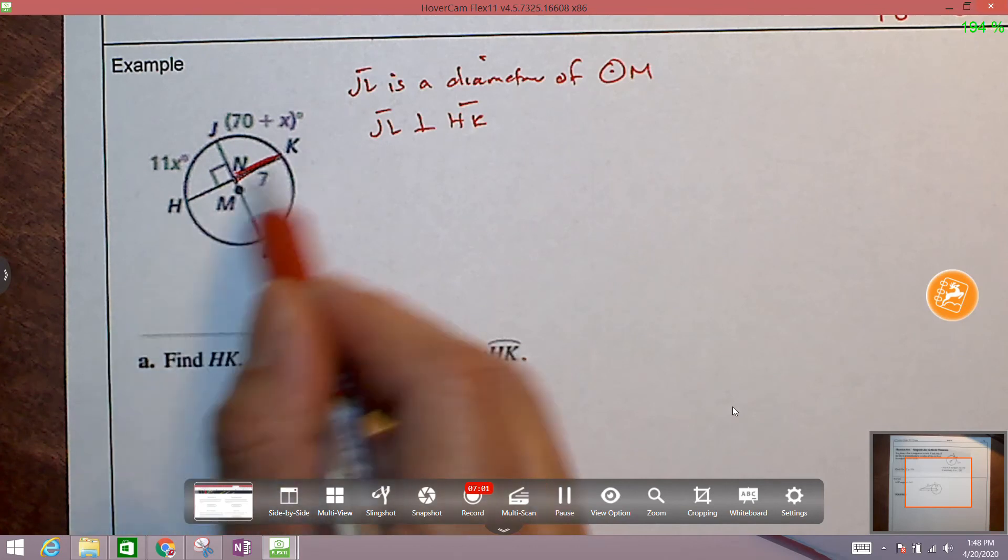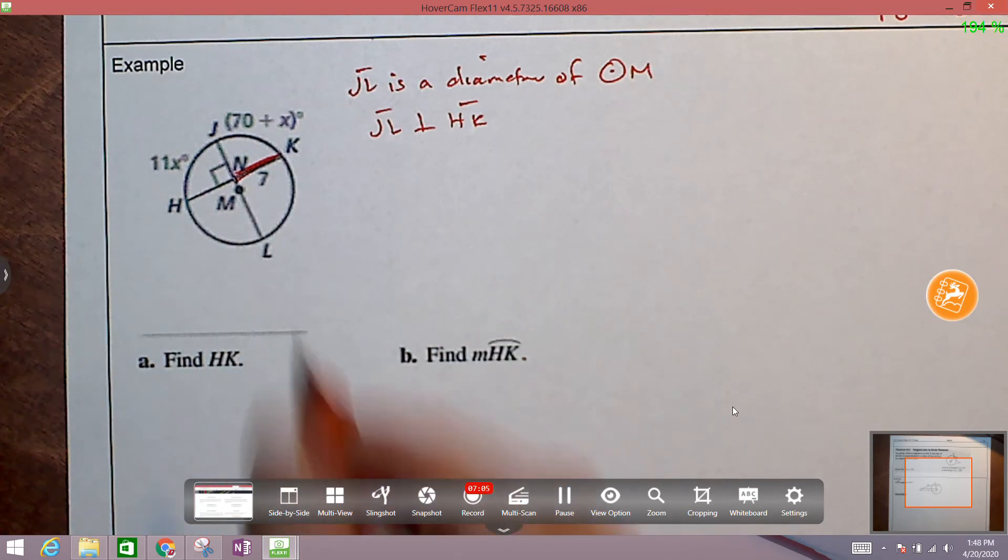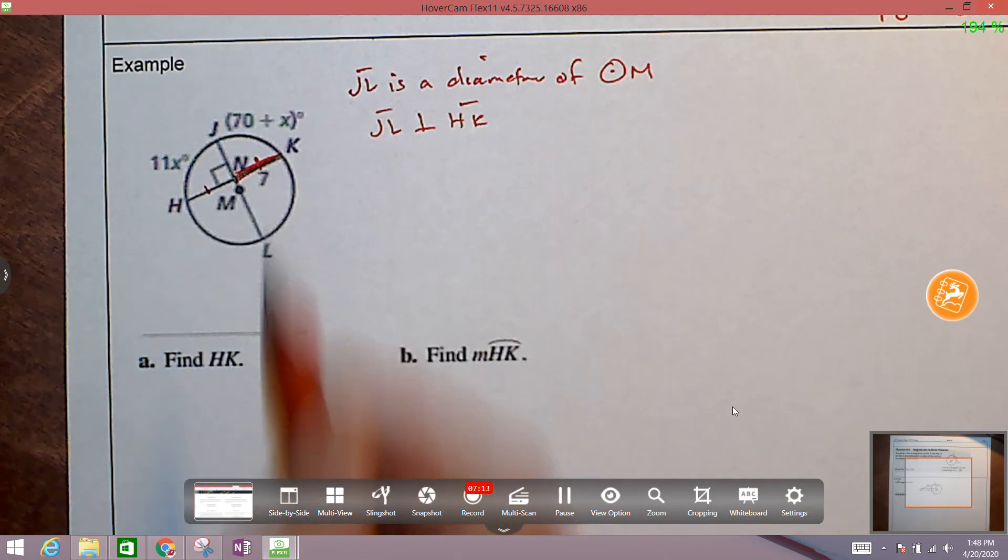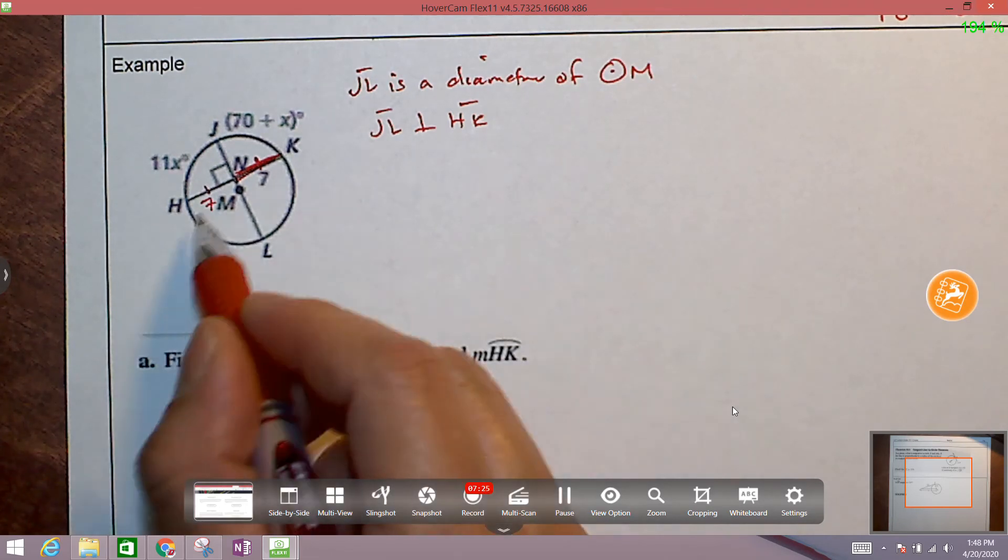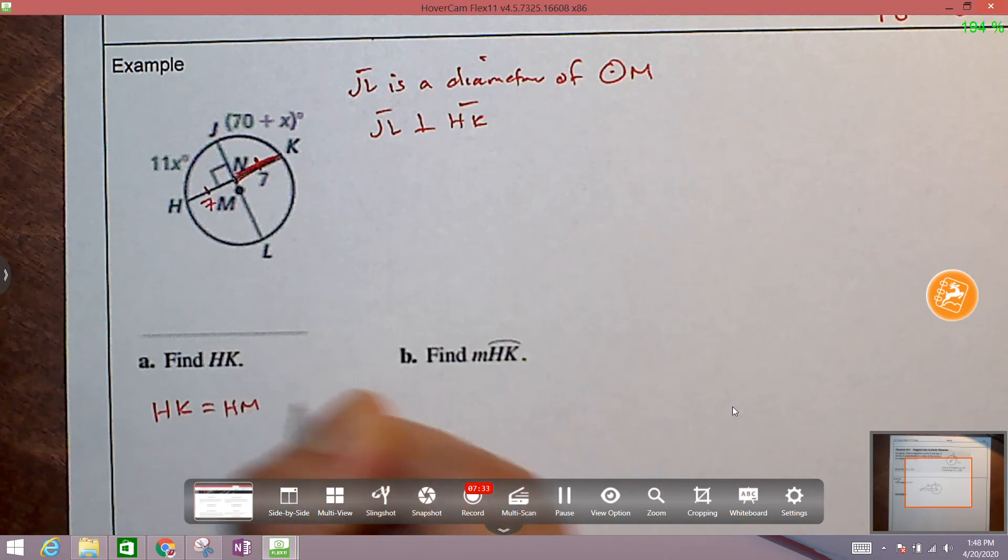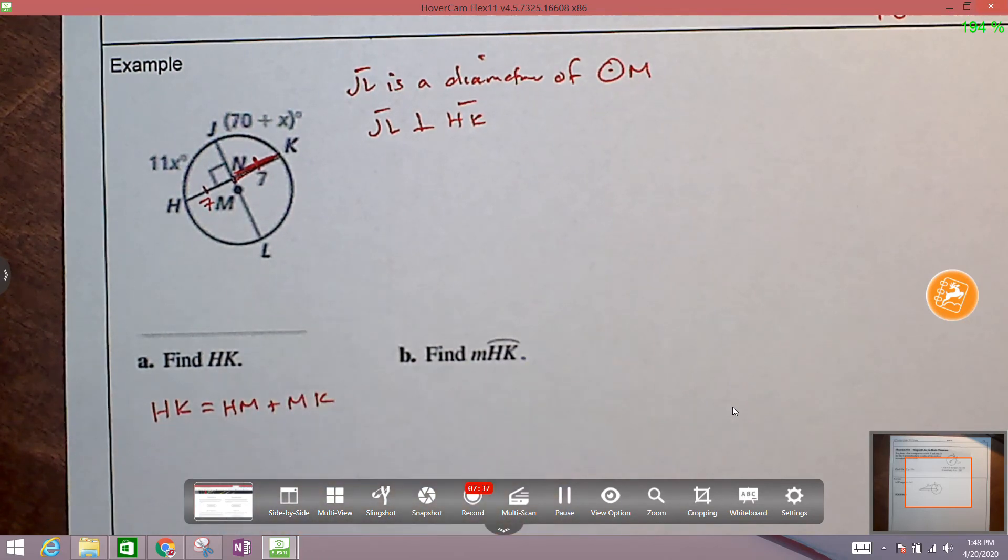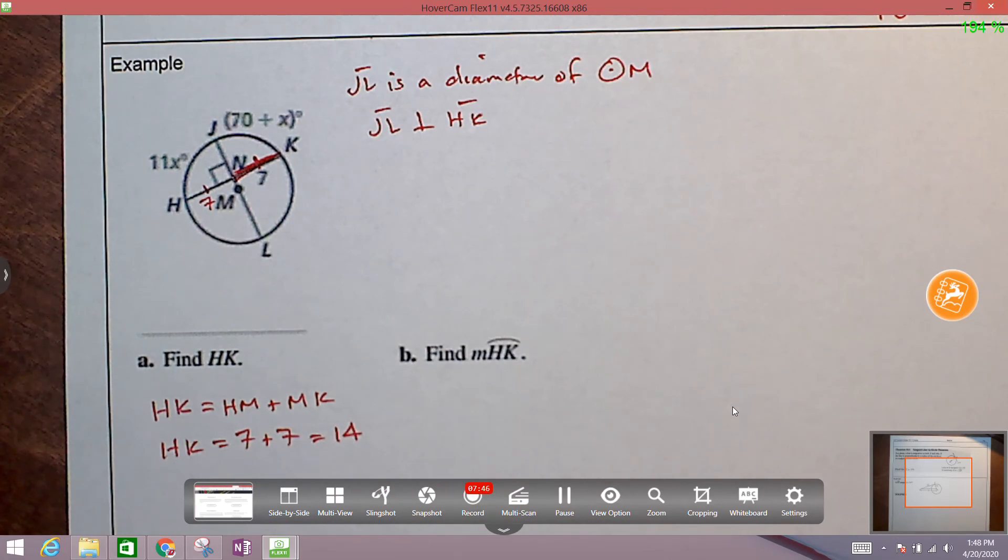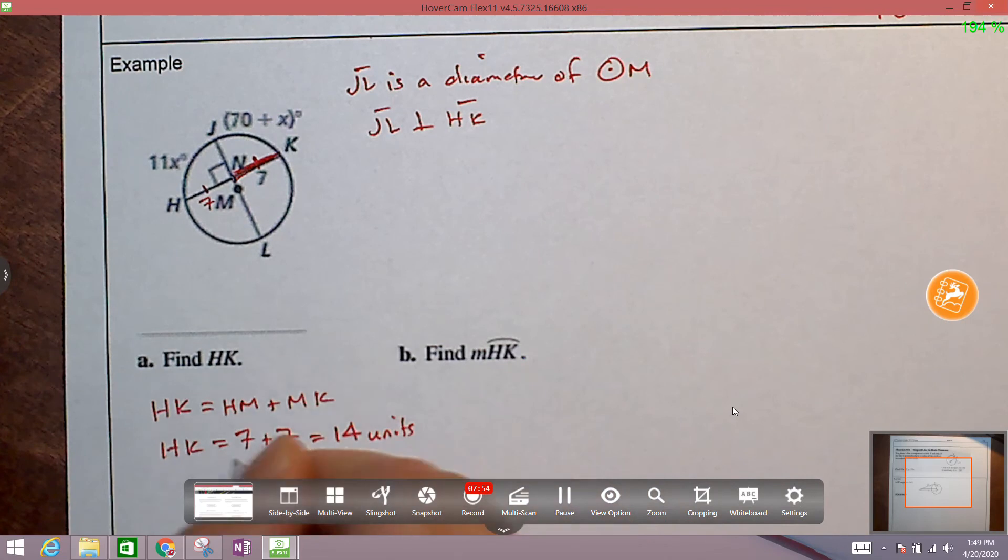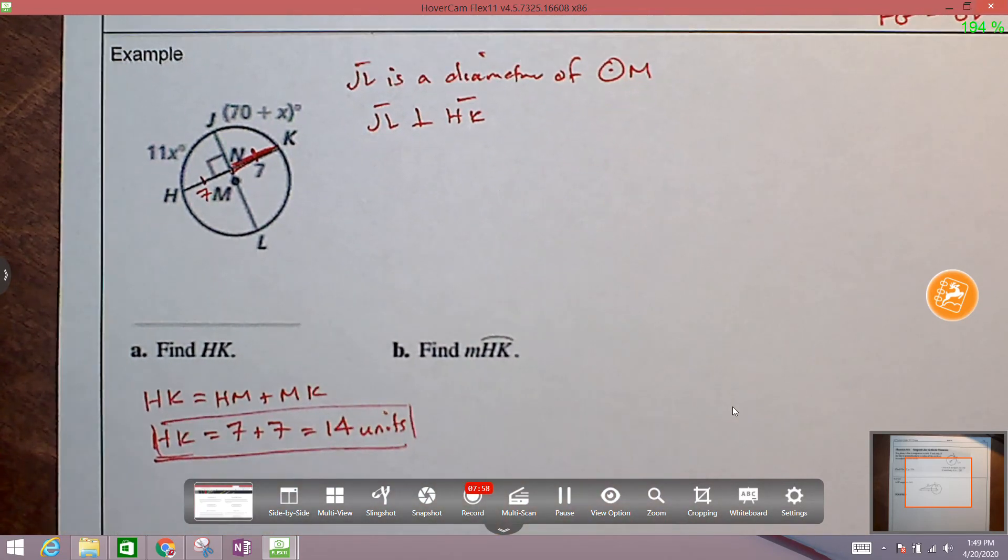But what did we learn in the theorem? We learned that anytime we have this kind of diagram, where we have a diameter that's a perpendicular bisector of a chord inside the same circle, we know that these two pieces are congruent. Because this diameter bisects or cuts this chord in half. So if NK is equal to 7 units, well, HN must also be 7 units. And so how long is HK? Well, HK, segment addition theorem, tells us that HK is equal to the length of H to M plus M to K. So we know that HK is equal to 7 plus 7, which equals 14. And what must we always put when we're finding the measure of something or the length of something? Units. And we don't know what the units are, so we're just going to write the word units.